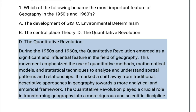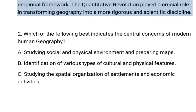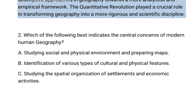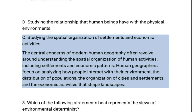The next question: what is the most important feature of modern geography? A. Studying social and physical environment and preparing maps. B. Identification of various types of cultural and physical features. C. Studying the spatial organization of settlements and economic activities. D. Studying the relationships that human beings have with the physical environments. The answer is C: studying the spatial organization of settlements and economic activities.